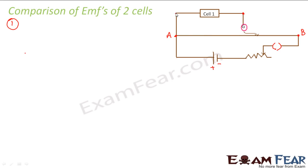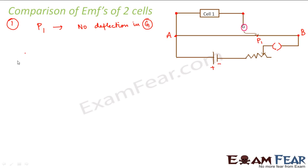The terminals of the potentiometer are the free end of A and the free end of the galvanometer. Between these two terminals we connect cell 1. When we connect cell 1, we start adjusting the jockey such that it comes to a point where there is no deflection in the galvanometer. Let us suppose that point is P1 — at point P1 there is no deflection. Let us say that the distance between A and P1 is equal to L1, and the total length of wire AB is capital L.